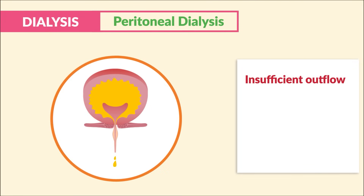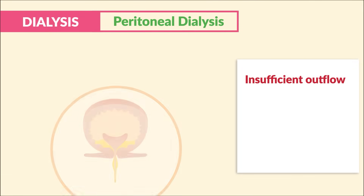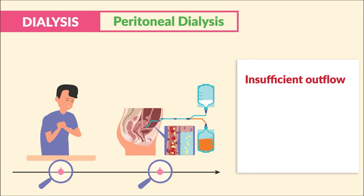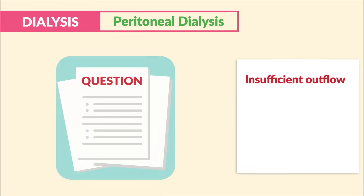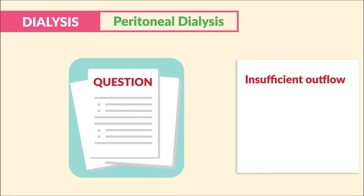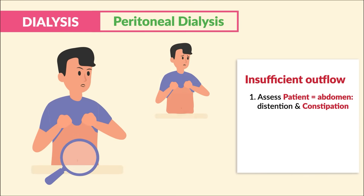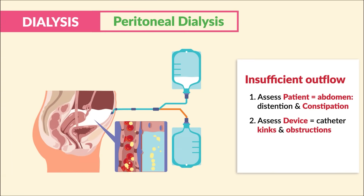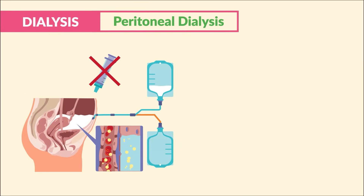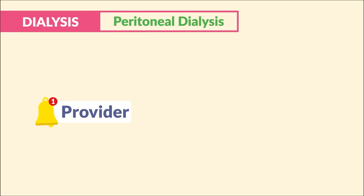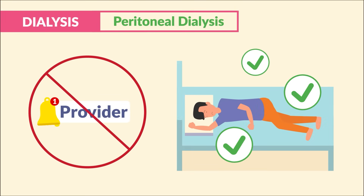Kaplan gave a scenario about a patient on peritoneal dialysis that begins to suddenly breathe more rapidly — the first action was to raise the head of the bed. A few select-all-that-apply questions came from insufficient outflow. Big NCLEX tip: always assess the patient first, then assess devices after. Assessment comes first before interventions. When you get a question about insufficient outflow: number one, assess the patient — assess the abdomen for distention and constipation. Number two, assess the device for catheter kinks and obstructions. Then, reposition to side-lying position. We don't flush the tubing initially, as this can worsen an outflow problem. There's no need to contact the provider since repositioning will usually fix the problem.